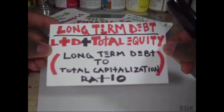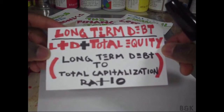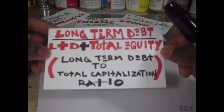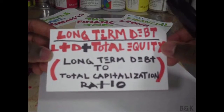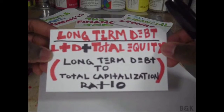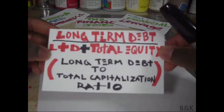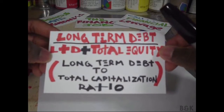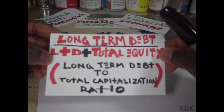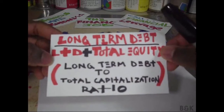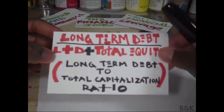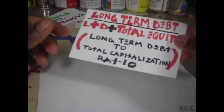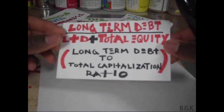The long-term debt to total capitalization ratio equals long-term debt — all the money we owe after a year — divided by long-term debt again, plus total equity. Total equity includes retained earnings, preferred stock, common stock, and all that.